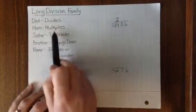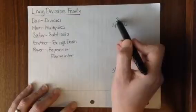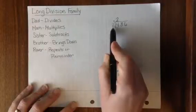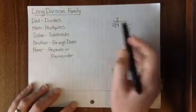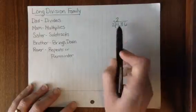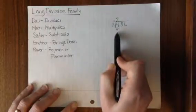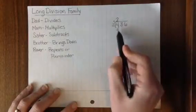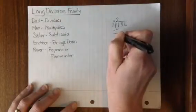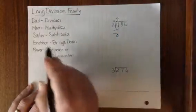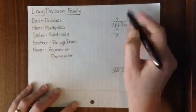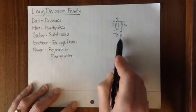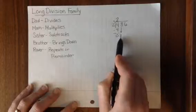The second step, Mom multiplies. We take our answer, 2, multiplied by our divisor, 2. 2 times 2 is 4. 4 gets put right below our first digit of our dividend. Next, Sister subtracts 4 take away 4, is 0. Brother will bring down our next digit in the dividend. He brings down the 8, and now we have 8 left over. But our problem is not done yet.